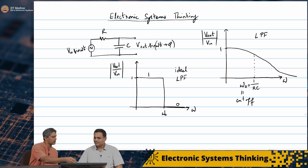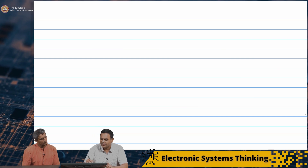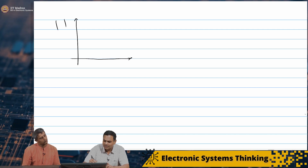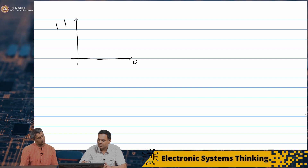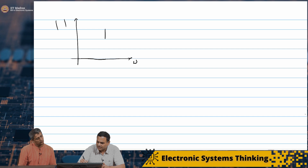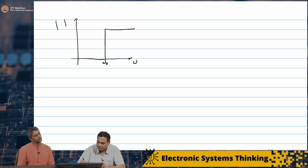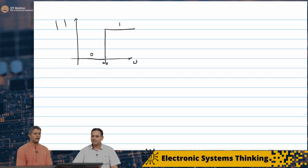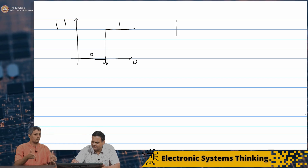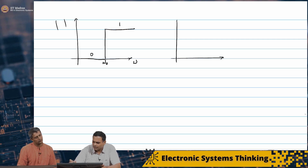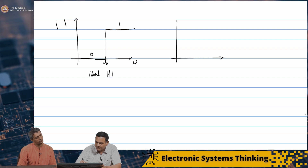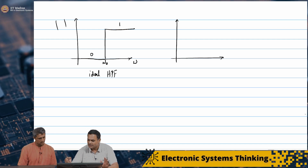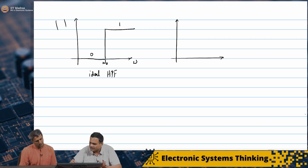The ideal high-pass filter is just the opposite — it passes nothing until ω₀ and then abruptly starts passing everything. And a band-pass filter is obtained by taking an ideal low-pass filter and an ideal high-pass filter together with different ω₀ values. So the band-pass would be flat between two cutoff frequencies ω₁ and ω₂, which is what we saw in the last couple of lectures.